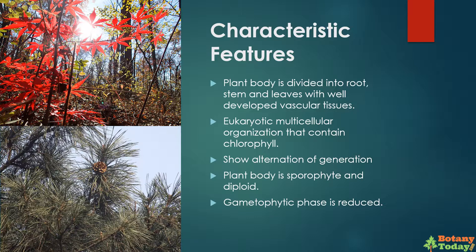The plant body of Phanerogams is well differentiated into root, stem, and leaves. They also have well-developed vascular tissues. Phanerogams are eukaryotic multicellular organisms that contain chlorophyll. The life cycle of Phanerogams is completed in two phases: sporophytic phase and gametophytic phase. This is called alternation of generation. In general, the plant body is sporophyte and diploid, while the gametophytic phase is present but reduced.